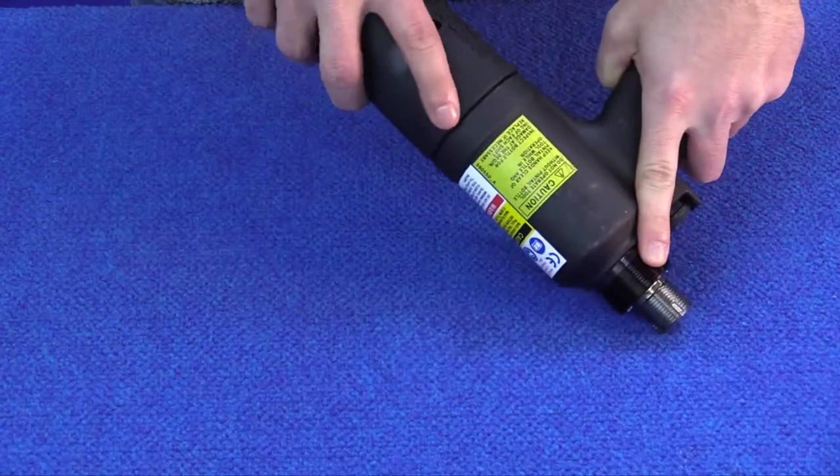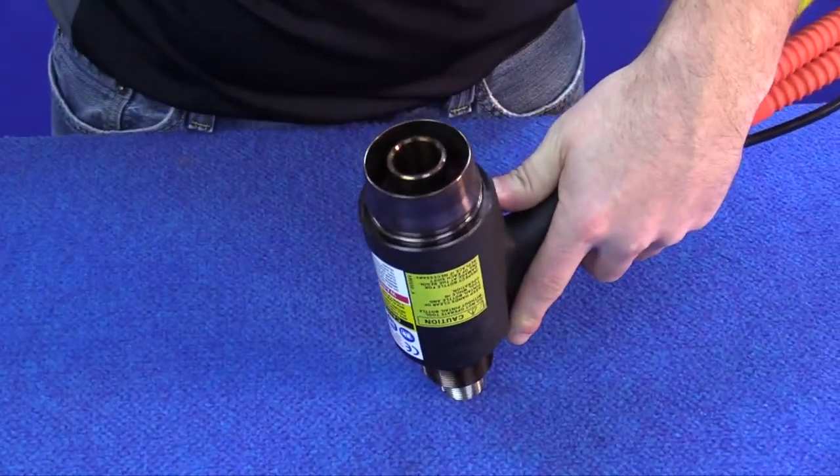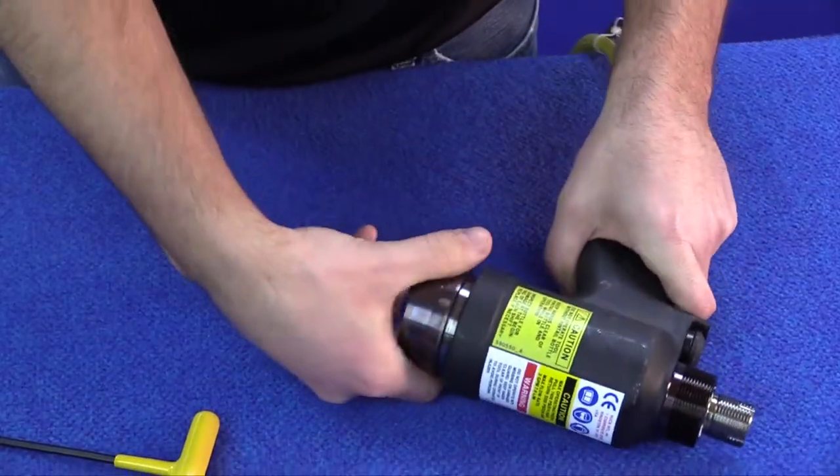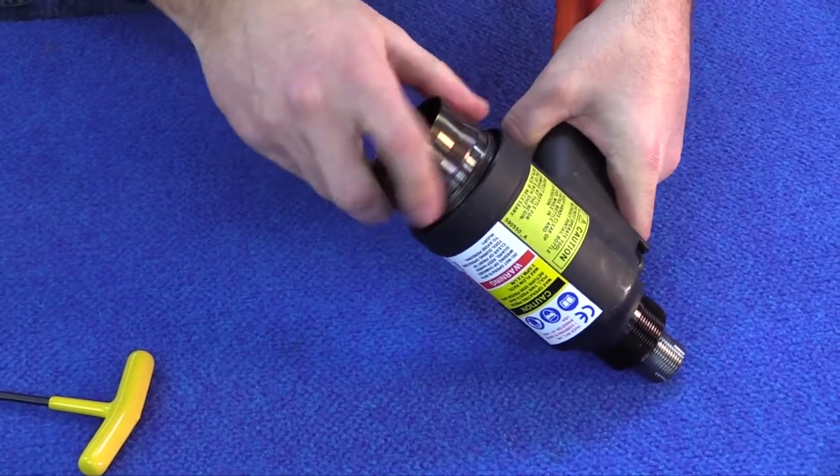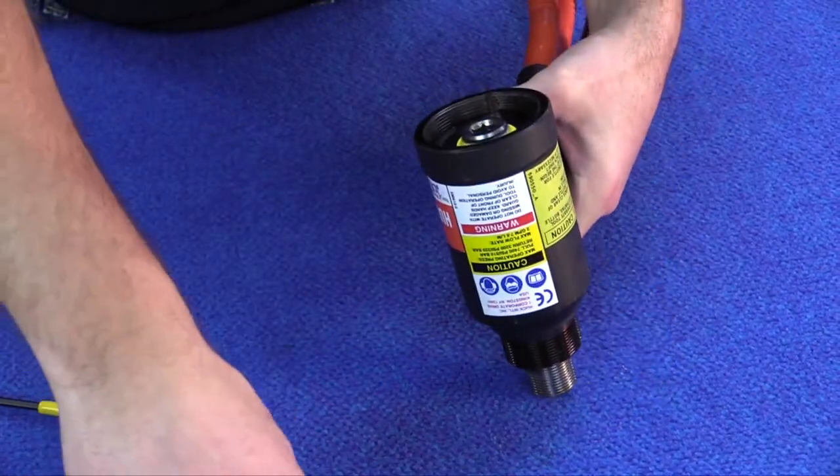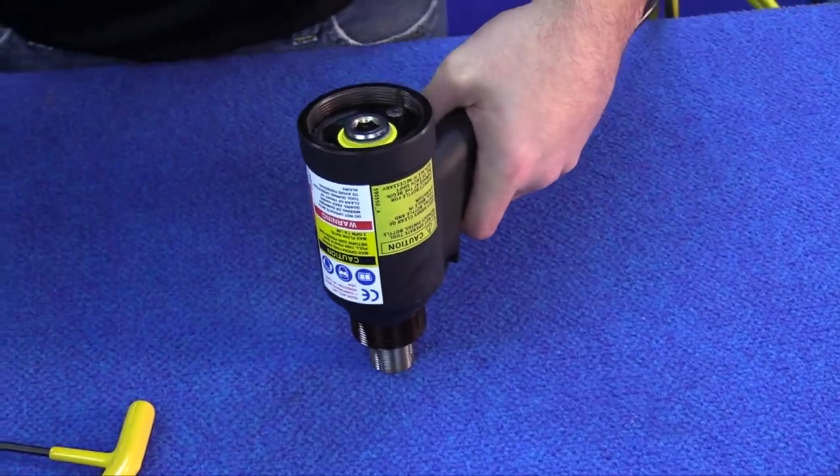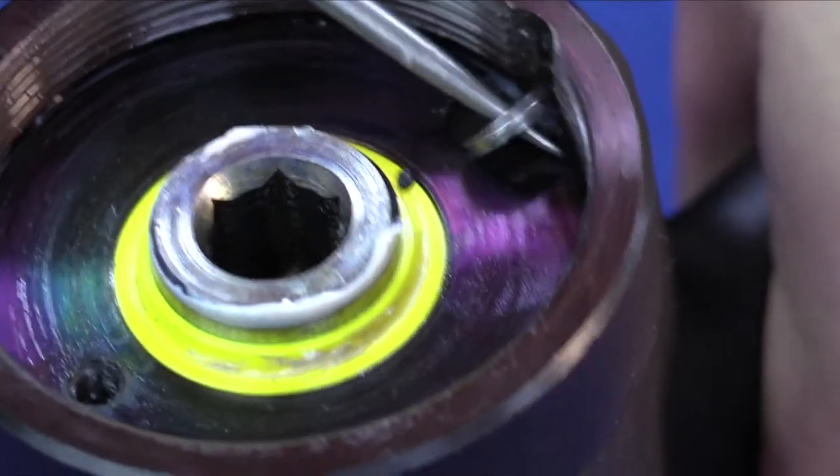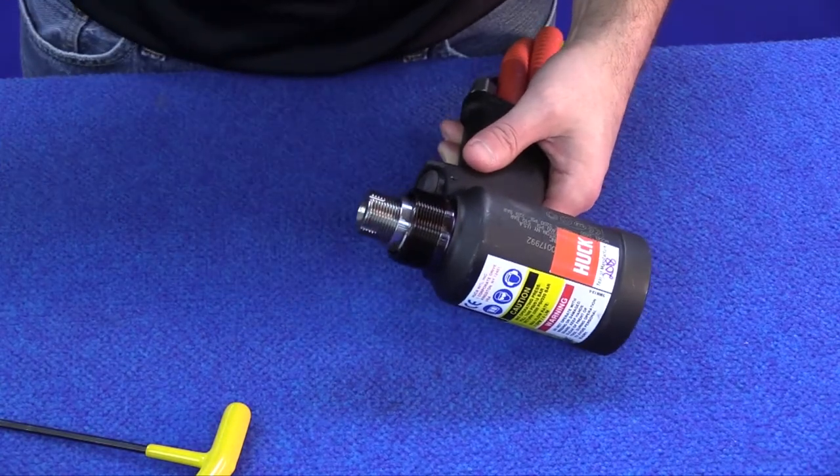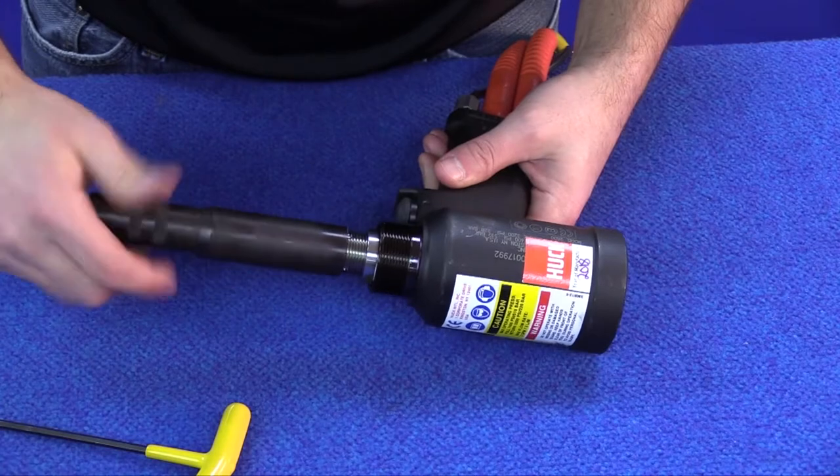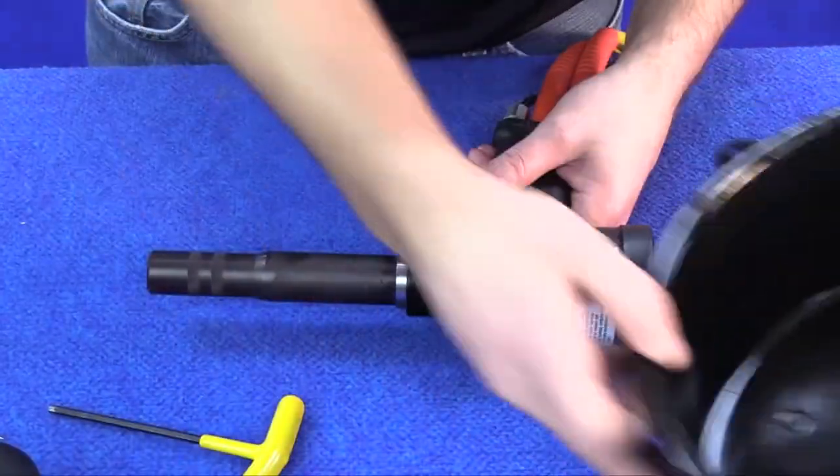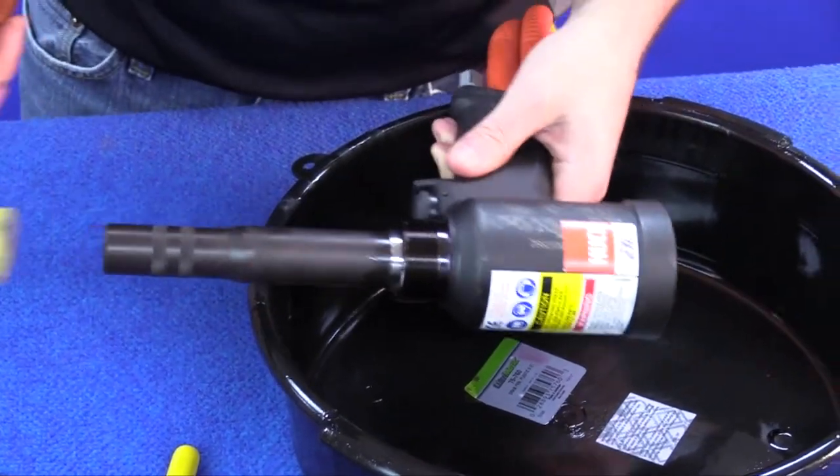First, start by removing the pin tail bottle. Remove the 5-32nd set screw. Unthread the back cap. Remove the locking disc. Install your spacer over the piston. Thread on an assembly bullet. Use a pan for excess oil. Tap on the bullet to remove the piston assembly.